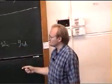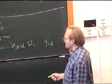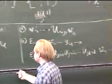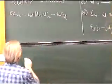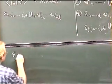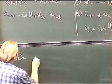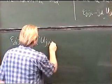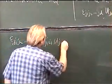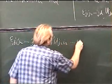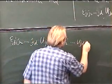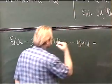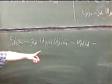So that's where we land up. And now we make exactly the same argument as yesterday, which is to say: epsilon j1, j2, up to jd, of u_j1 i1, u_j2 i2, up to u_jd id — what is this thing equal to? Well, it's an antisymmetric tensor.